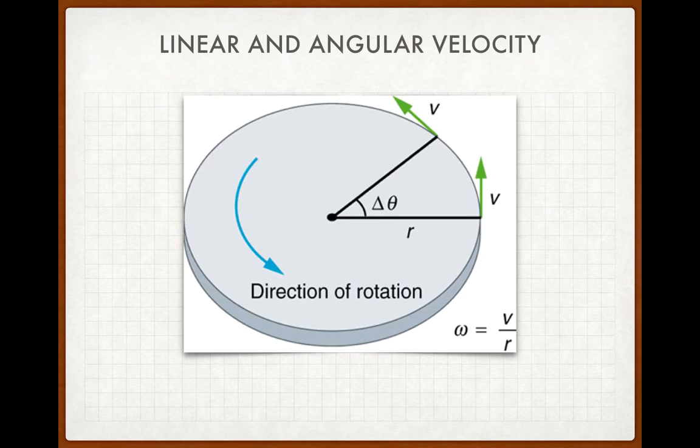Now there's a couple of things to note here. If I cross multiply, v is equal to rω, so the linear velocity is equal to the angular velocity multiplied by the radius.